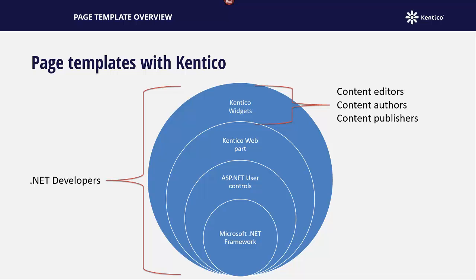The second is Kentico Web Parts. Kentico Web Parts are user controls that have inherited the Kentico API. For developers, a Web Part is a Web User Control, or ASCX, that inherits from the CMS Abstract Web Part class. This allows developers to reuse and extend their user controls to include the Kentico API. For content editors, authors, and publishers, there are over 400 Web Parts available for immediate use, including site fundamentals like content display and more advanced features like integration with social channels like Facebook and Twitter.